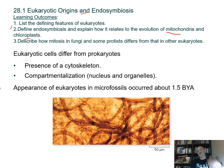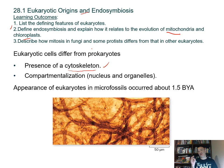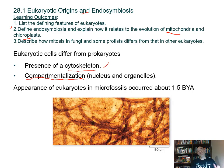Some groups show that nuclear envelope disintegration doesn't occur. Eukaryotic cells differ from prokaryotes: they have a cytoskeleton made of fibrous proteins including microtubules, microfilaments, and intermediate filaments. They also have membrane-bound organelles that provide compartmentalization, allowing the cell to separate and perform different metabolic functions within distinct compartments.